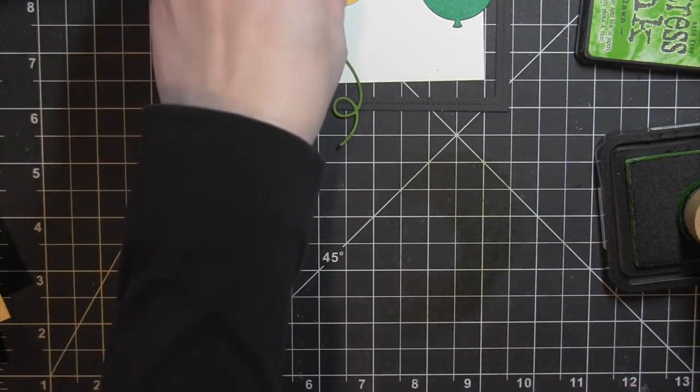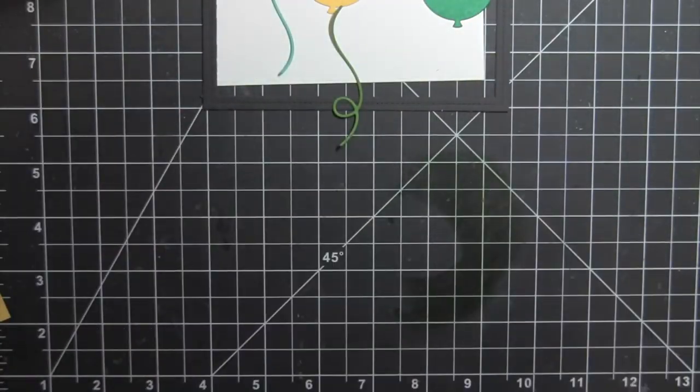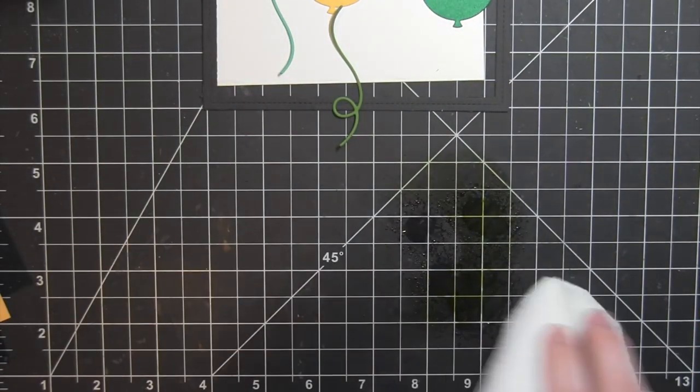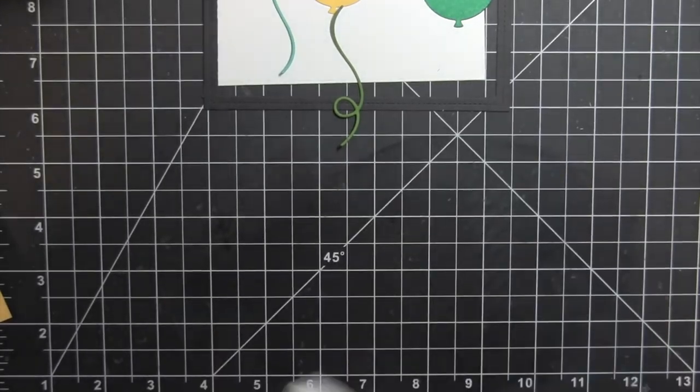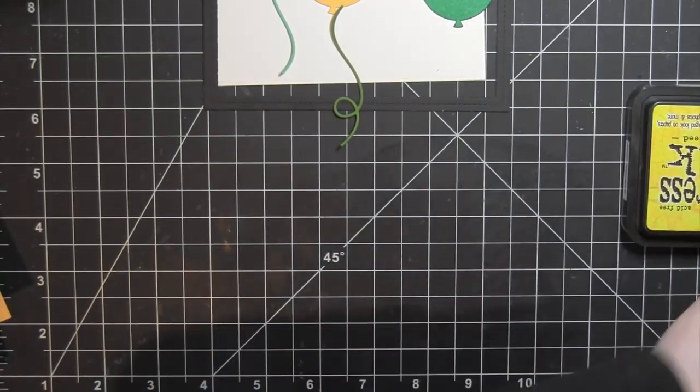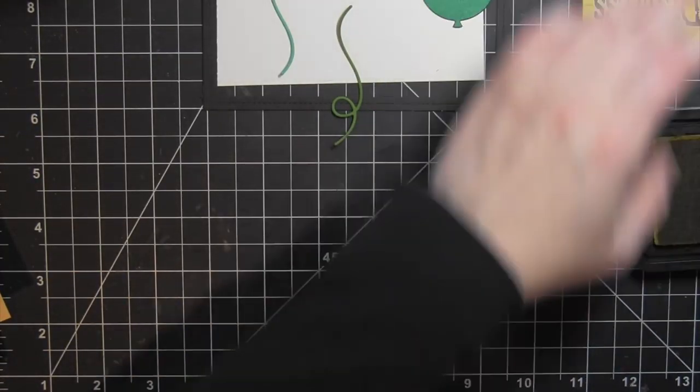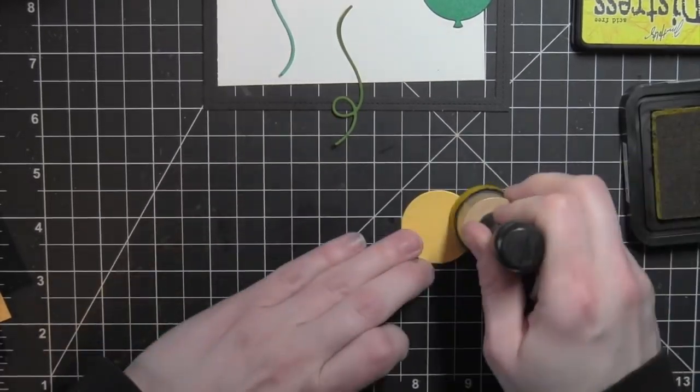As that ink dries, it will lighten just a tiny little bit. Again, I'm going to move that aside, clean up my mat with a little bit of water and a paper towel. Then for the yellow balloon, I'm using Mustard Seed Distress Ink.